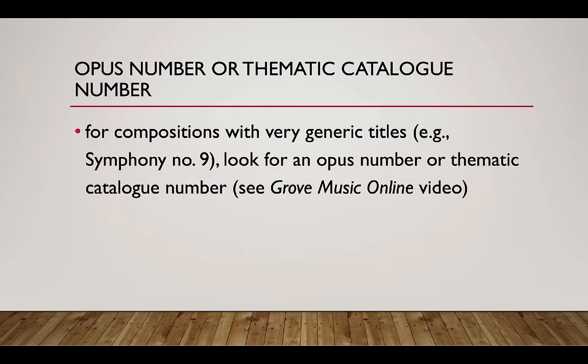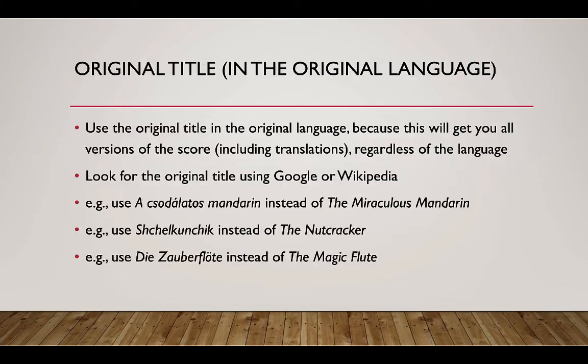See our Grove Music Online video. Use the original title of the composition in the original language, because this will get you all versions of the score, including translations, regardless of the language. Look for the original title using Google or Wikipedia. For example, use 'Die Zauberflöte' instead of 'The Magic Flute'.